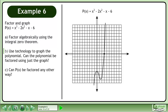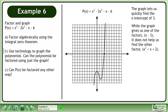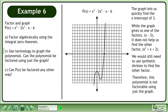Use your graphing calculator to obtain the graph. The graph lets us quickly find the x-intercept of 3. While the graph gives us one of the factors, (x - 3), it does not help us find the other factor, x² + x + 2. We would still need to use synthetic division to find the other factor. Therefore, this polynomial is not factorable using just the graph.